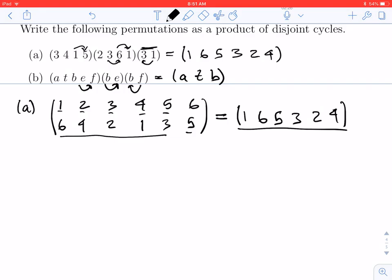So that's how we can take a product of permutations, which may not be disjoint, and write them as—in this case, there's one cycle, but it could have been a product where they are completely disjoint.